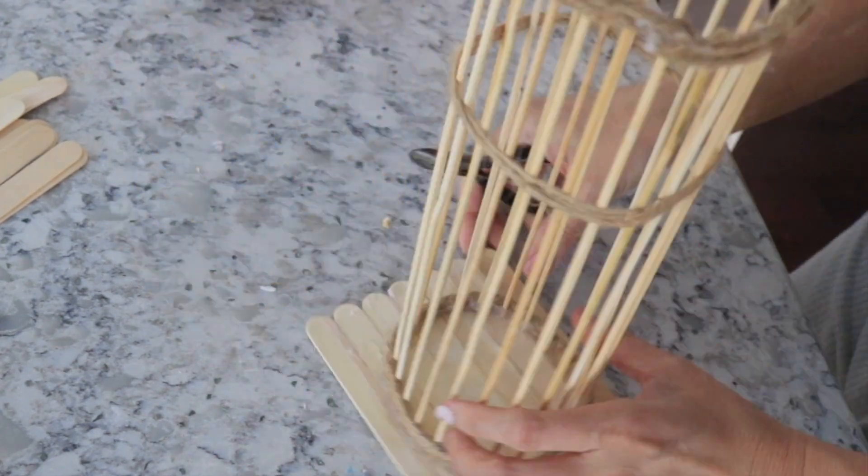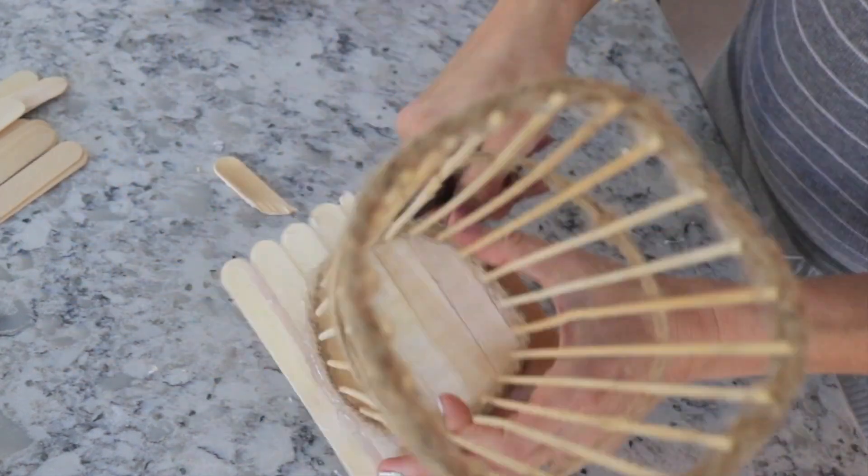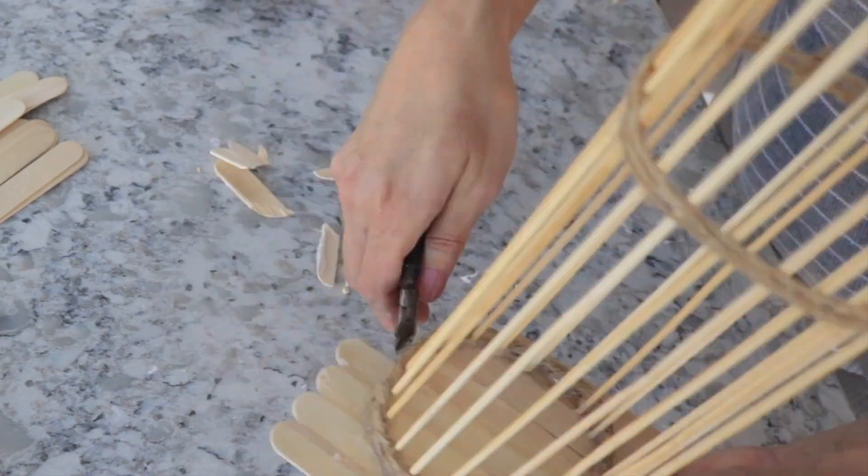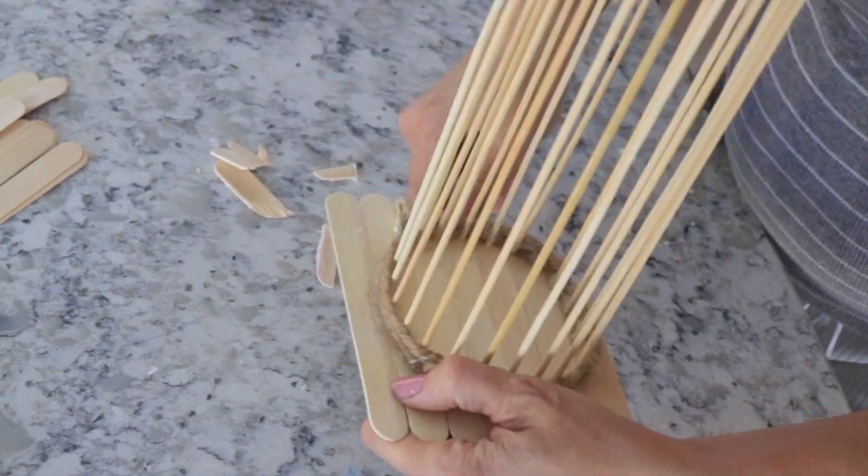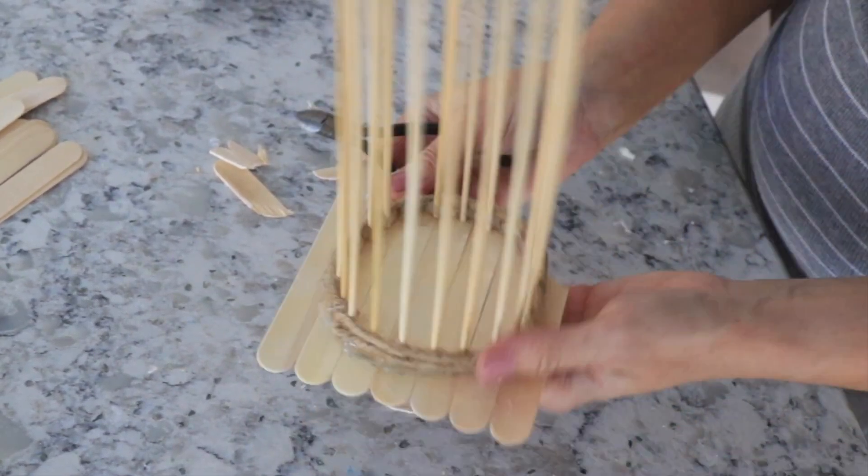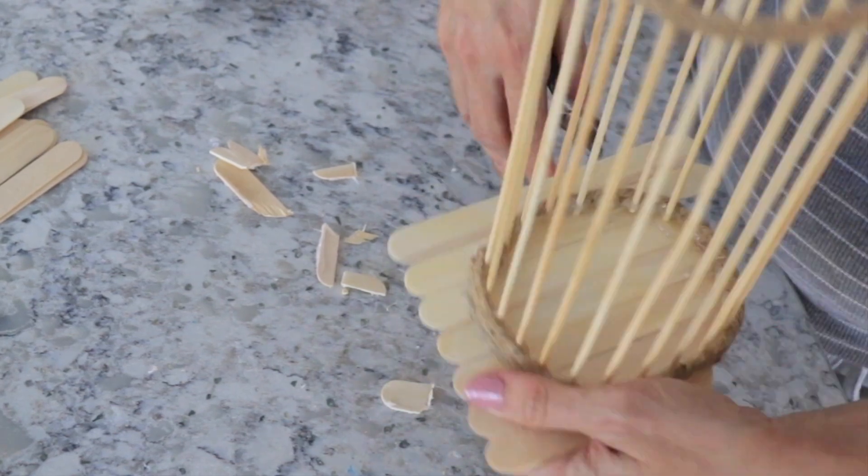Now that the glue is completely dry, I'm just taking these little, I think these are wire cutters as well, and I'm just cutting off the excess pieces of the craft sticks so that it's just the circle base on the lantern.